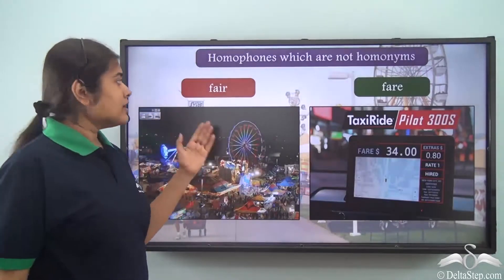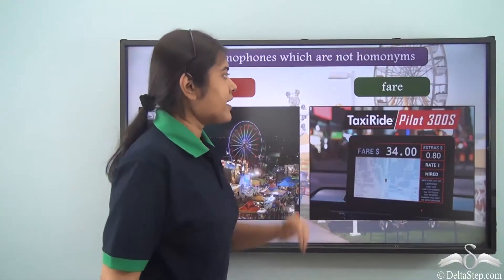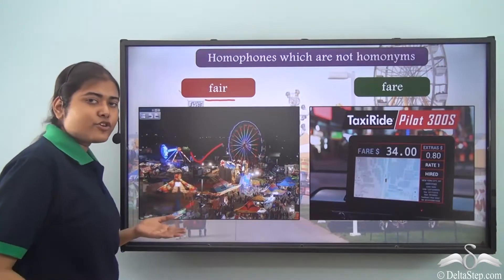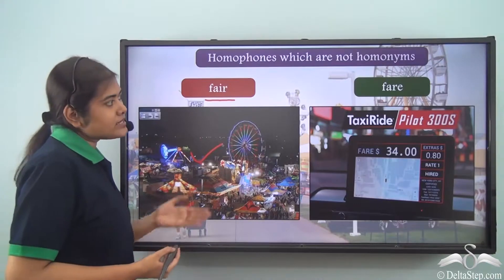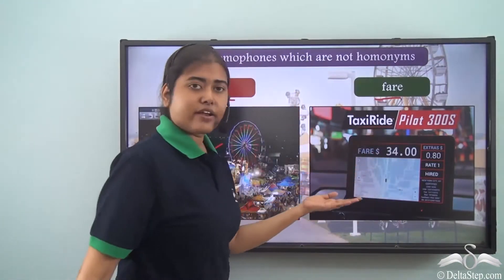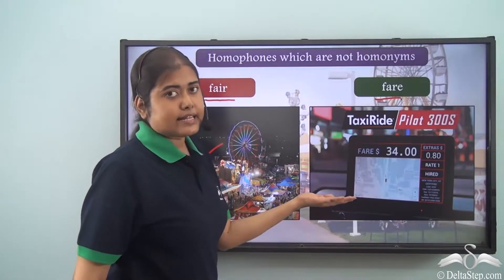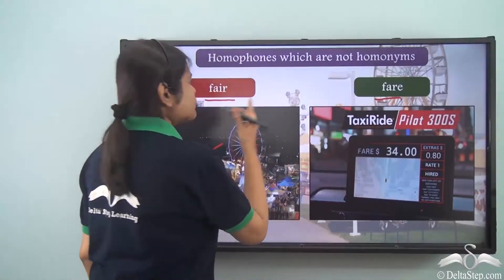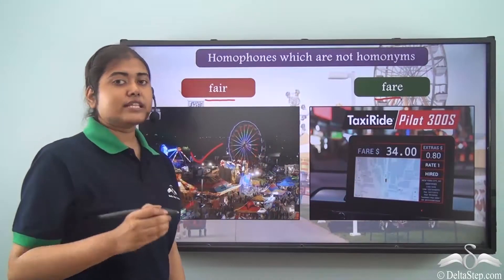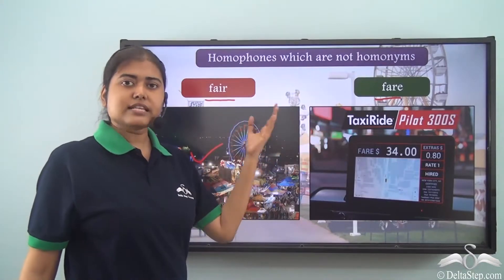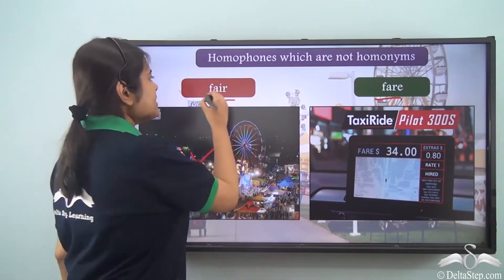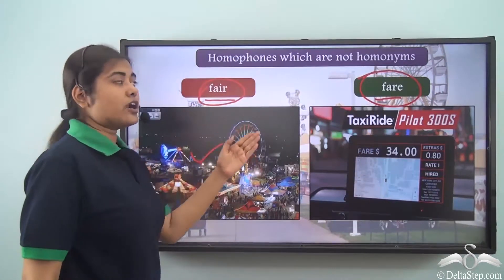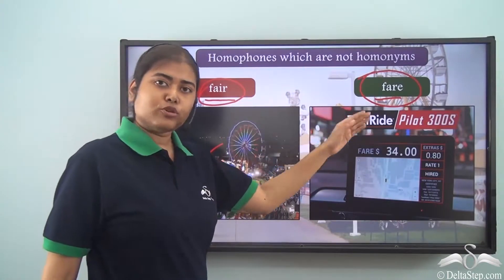Once again, the words 'fair' and 'fare'. This 'fair' refers to a public event meant for amusement, and this 'fare' refers to the charge of the vehicle — the amount the passenger needs to pay. Now these two words are pronounced in the same way, both pronounced as 'fair'. But you see the spellings are different. So these are homophones but not homonyms.